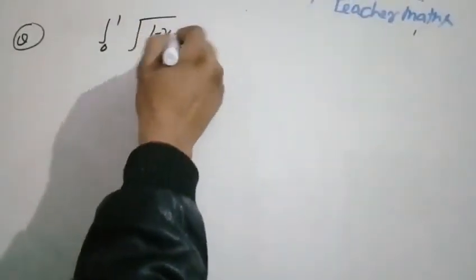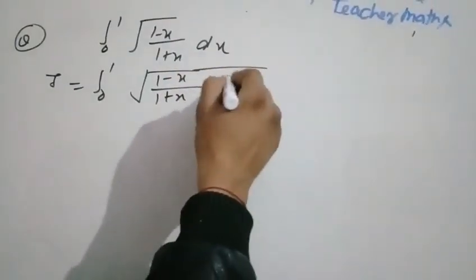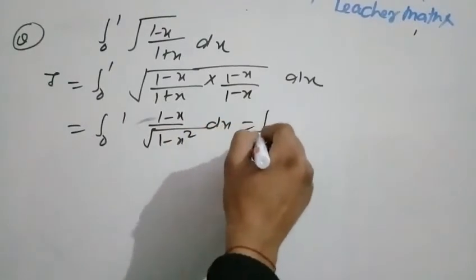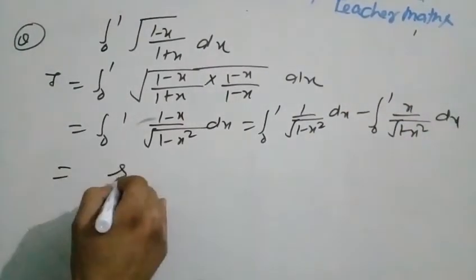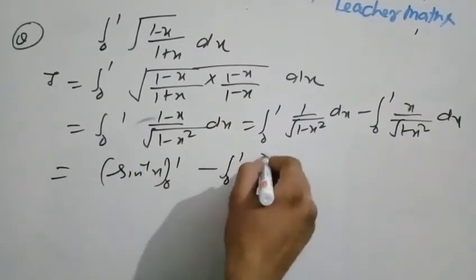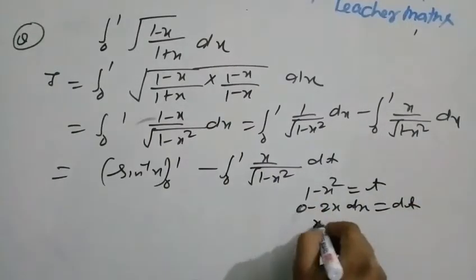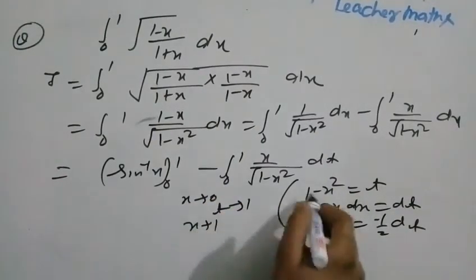Next question: integration from 0 to 1 of (1 minus root x) by (1 plus root x) dx. We multiply by the conjugate. Let 1 minus x squared equal to t, then 2x dx equals dt, so x dx equals minus 1 by 2 dt. Limit change: when x equals 0, t equals 1; when x equals 1, t equals 0.